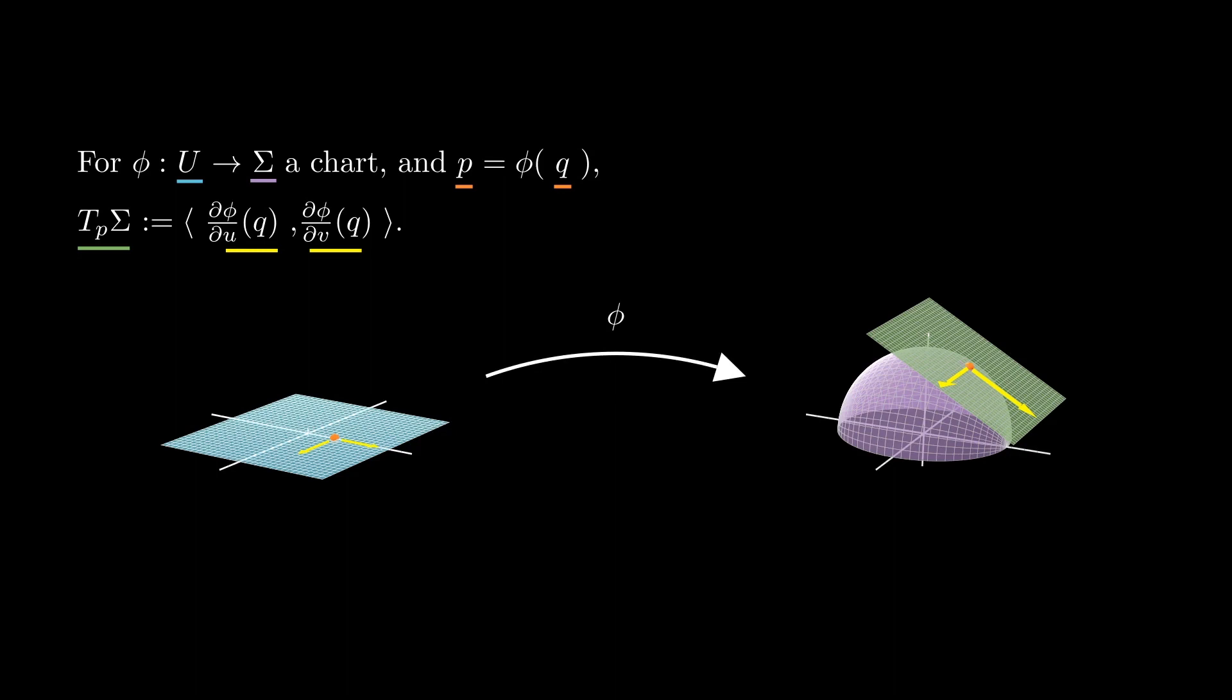The vectors in this plane are called the tangent vectors to sigma at p. Remember that from the definition of parametrization, these two partial derivatives are linearly independent, so indeed this is a two-dimensional plane.